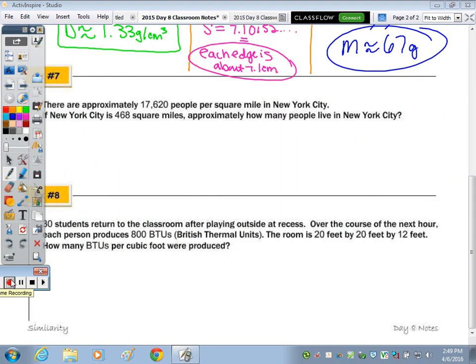Number 7 is population density. So the number of people, we're going to compare the number of people over the space or the area of land that you're talking about. So there are 17,620 people per square mile in New York City. If New York City is 468 square miles, approximately how many people live in the city? So the equation is going to be 17,620 is equal to...